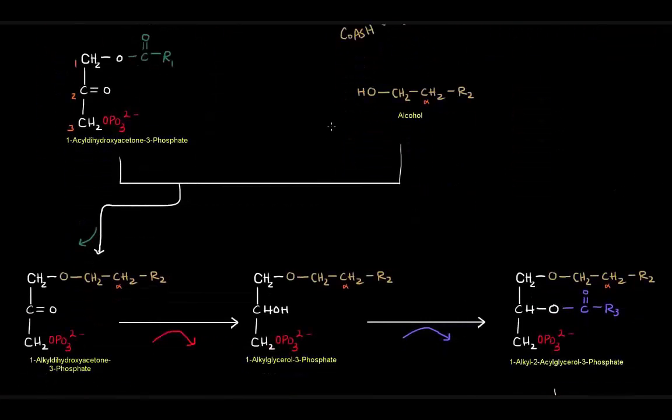Moving on. Next thing that happens is that we're going to take this 1-acyl dihydroxyacetone 3-phosphate and connect it with this alcohol. In fact, precisely what we're going to do is this acyl group here will be displaced by this alcohol portion. So what happens here is these two things come together. This acyl group comes off as a fatty acid, and we end up having that chain there replace this acyl group.